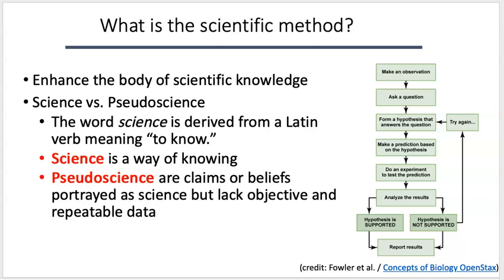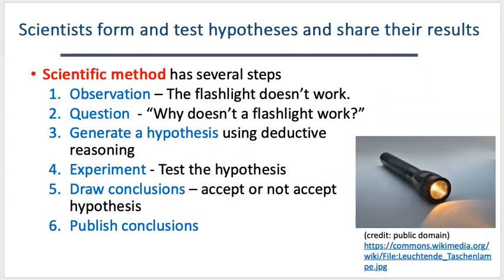So what are the steps used to generate scientific knowledge? We're going to organize the scientific method into six steps: observation, question, generate a hypothesis, experiment, draw conclusions, and publish conclusions. In this first video, I want to go through what those steps mean using a general example.